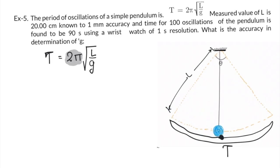Reading the question, measured value of L is 20 cm known to 1 mm accuracy. 1 mm accuracy means this is delta L given to you. And always remember, if this is in cm, you have to convert delta L also in cm. They will twist it by changing the units.